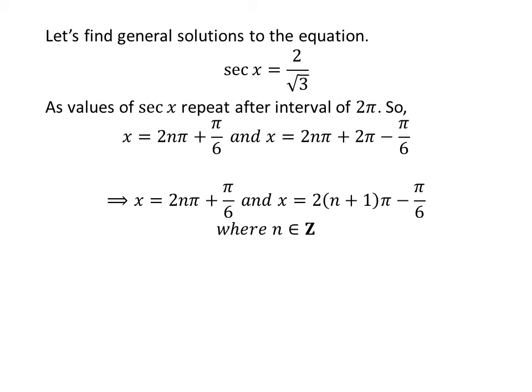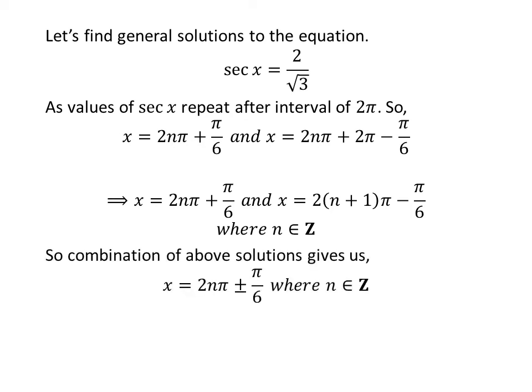Further simplification gives us the general solutions: 2 times n times pi plus pi upon 6, and 2 times n plus 1 times pi minus pi upon 6. Combining the above solutions gives us the general solution of the equation as 2 times n times pi plus or minus pi upon 6, where n is an integer.